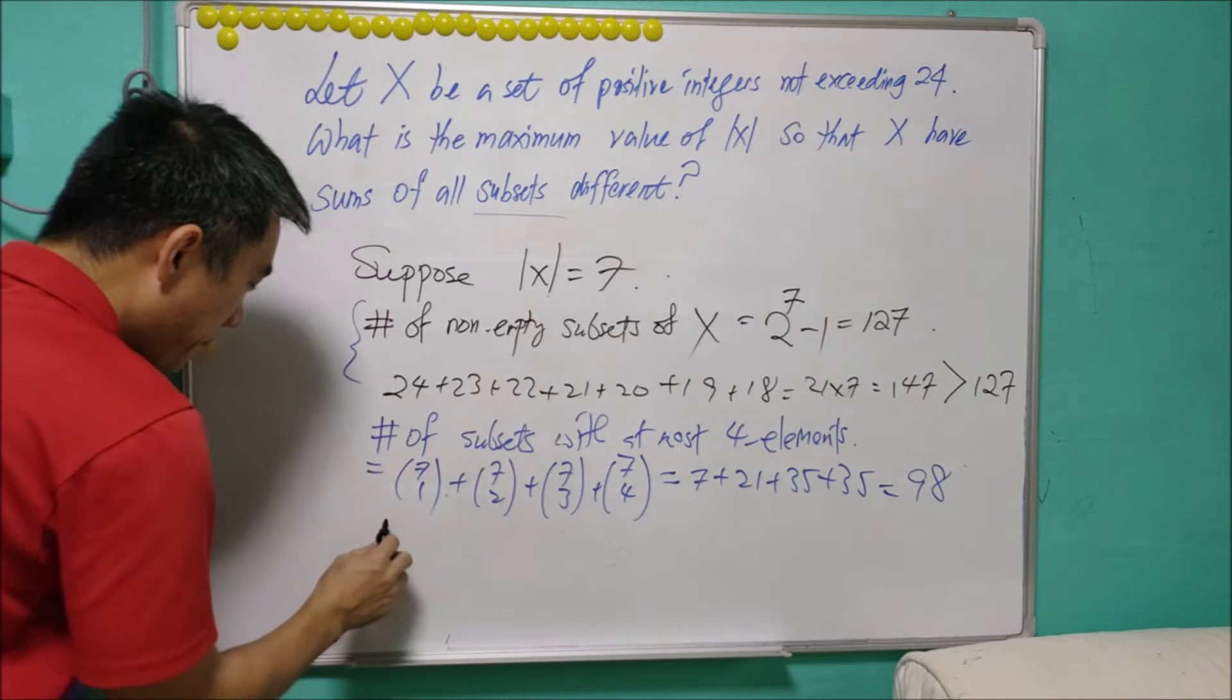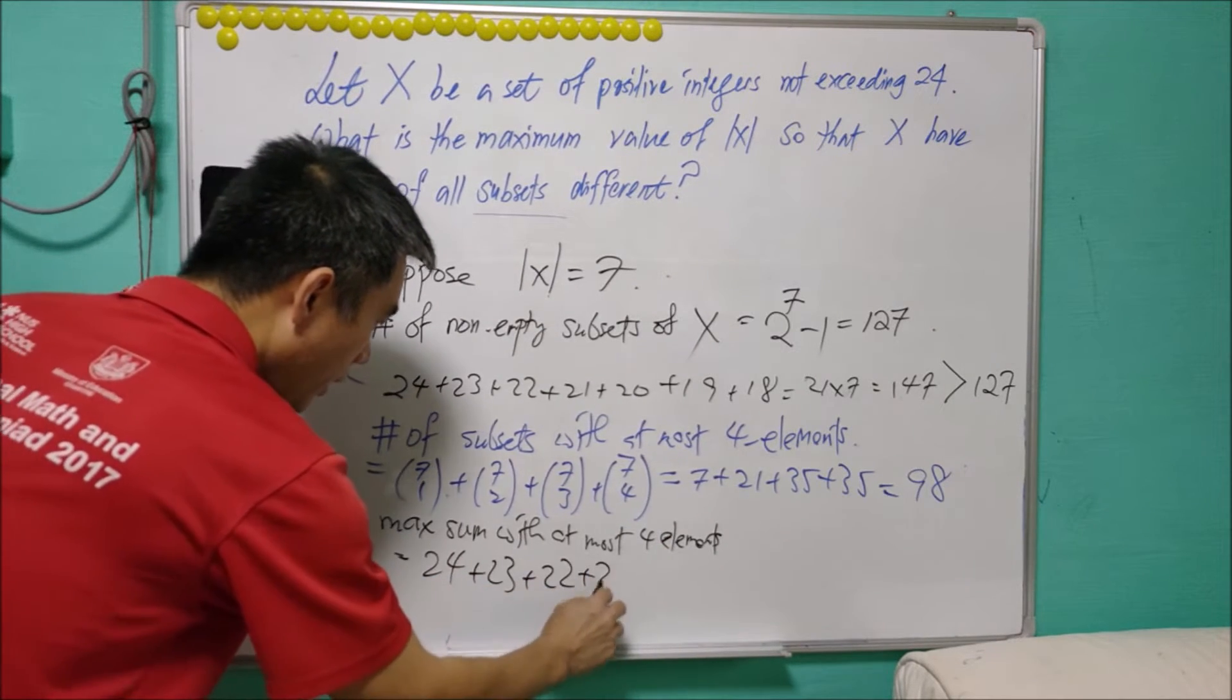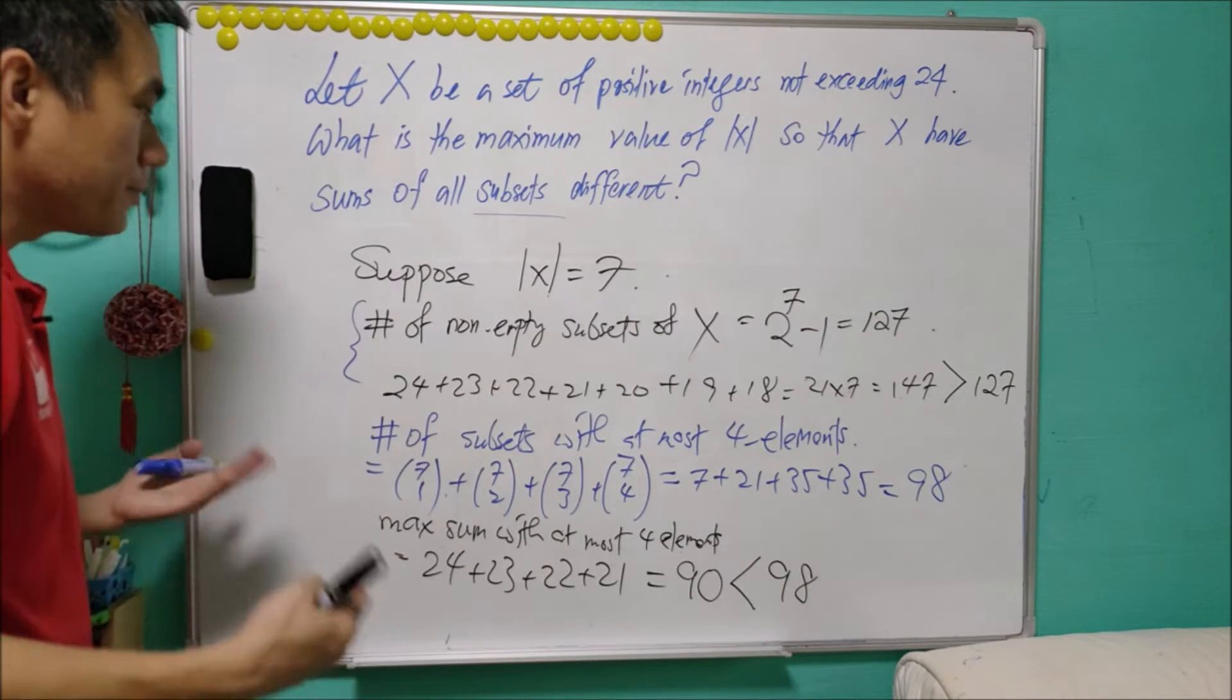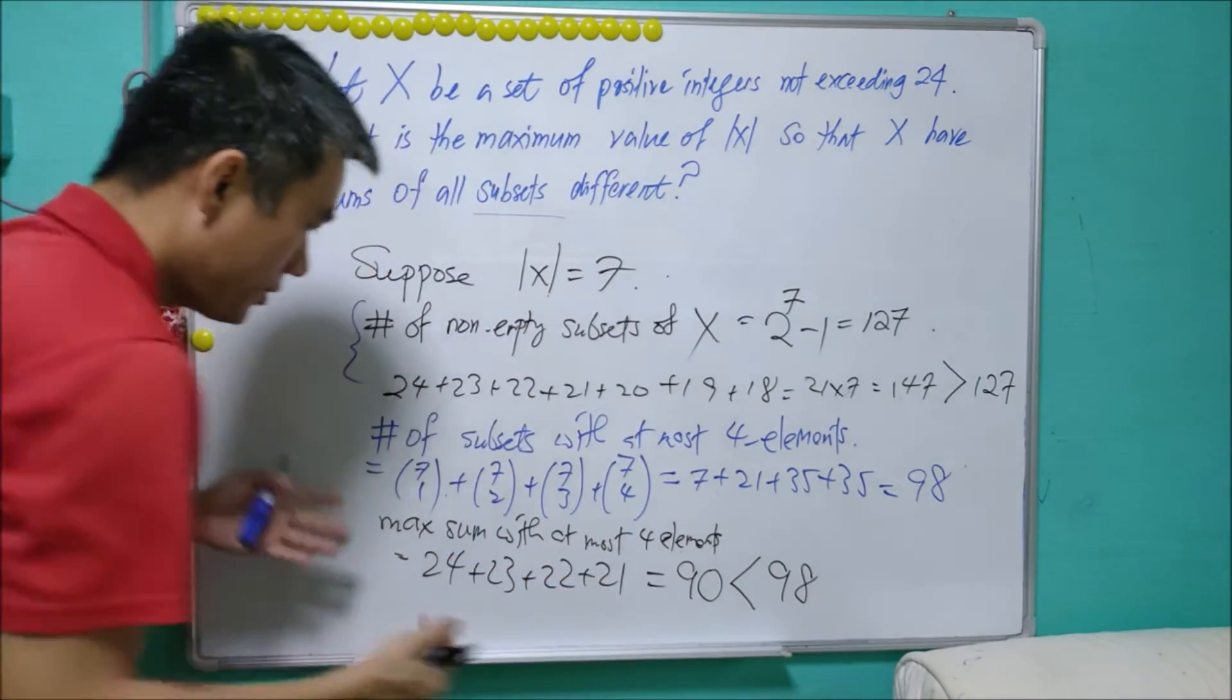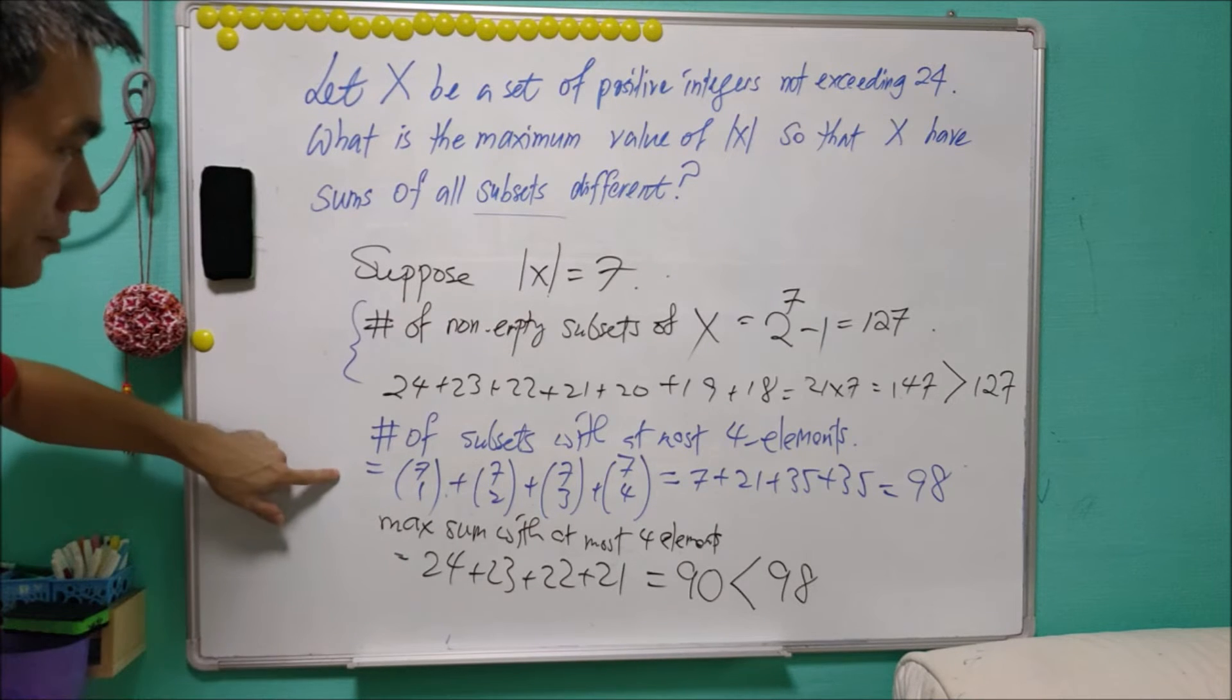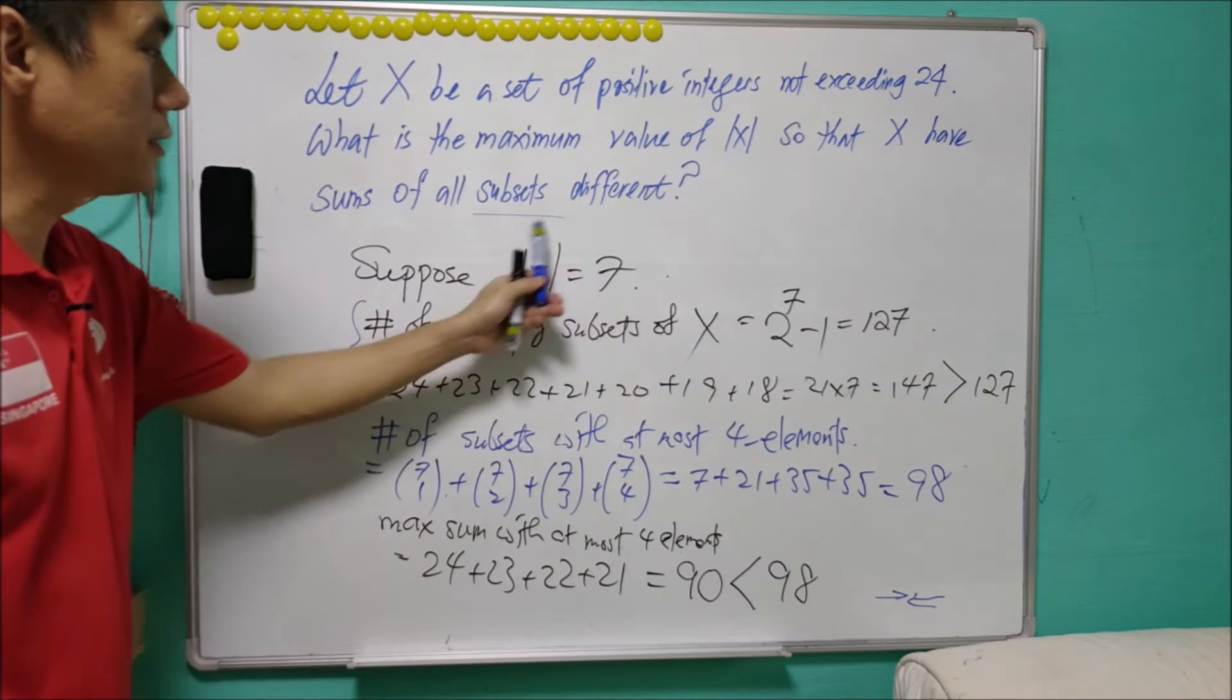Then we compare to the maximum sum with at most 4 elements. The sum will equal 24 + 23 + 22 + 21, which is equal to 90. And for this 90, this is less than 98. So, now pigeonhole principle helps. Now, we created 98 pigeons, but we have only 90 pigeon holes. So, it means that there must be two pigeons placed inside the same pigeon hole. In other words, from these subsets, there must be at least two of them that will have the same sum. It cannot satisfy the condition. And therefore, 7 is not possible.